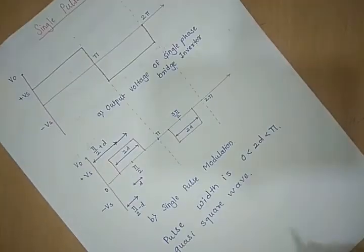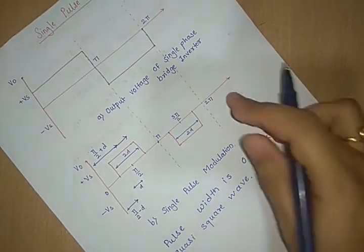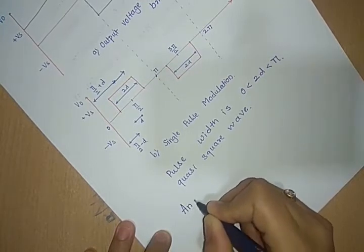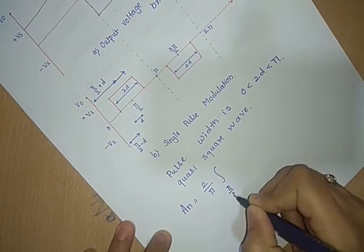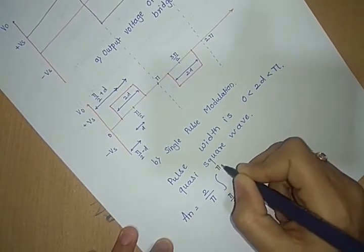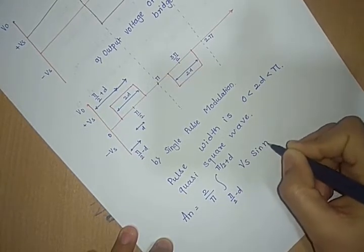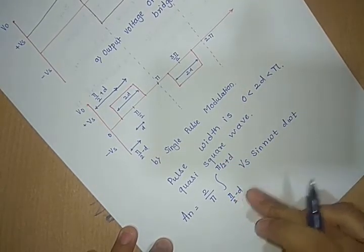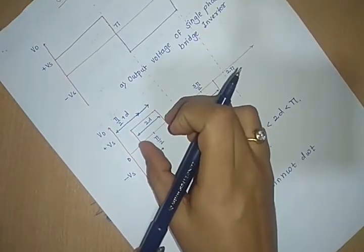We will continue our discussion with the Fourier series analysis of the output waveform. The Fourier series analysis gives the coefficient an as: an = (2/π) × integral from (π/2 − d) to (π/2 + d) of Vs sin(nωt) d(ωt). The limits are π/2 − d and π/2 + d because the pulse width is 2d, meaning the pulse starts at π/2 − d and ends at π/2 + d.